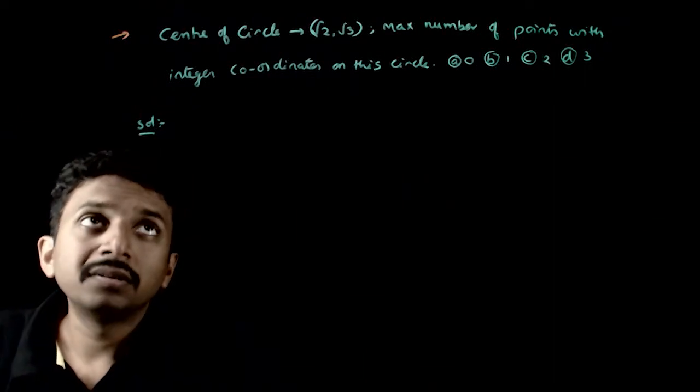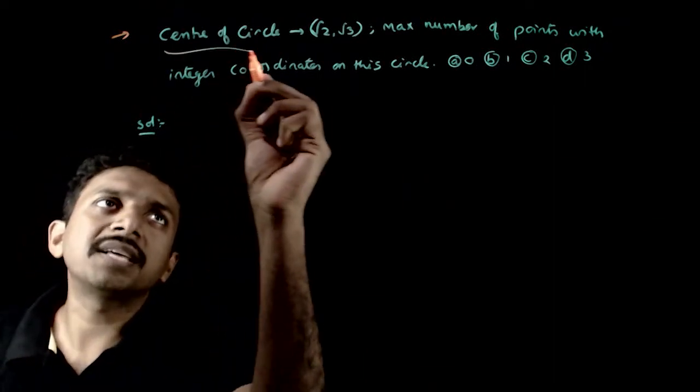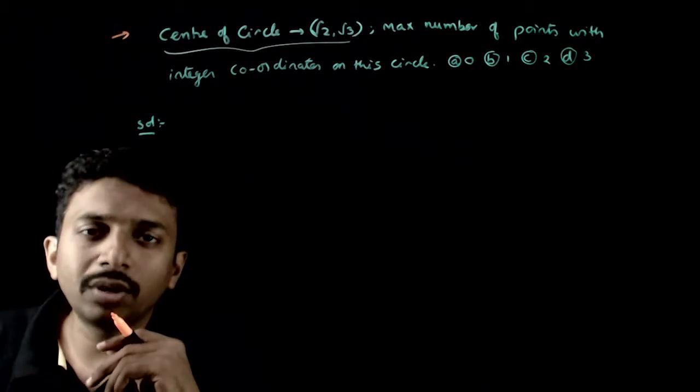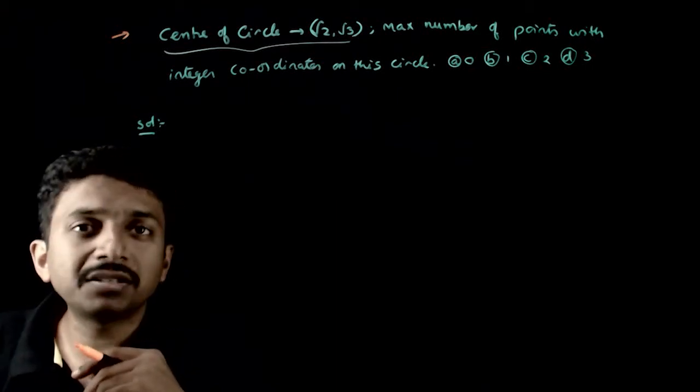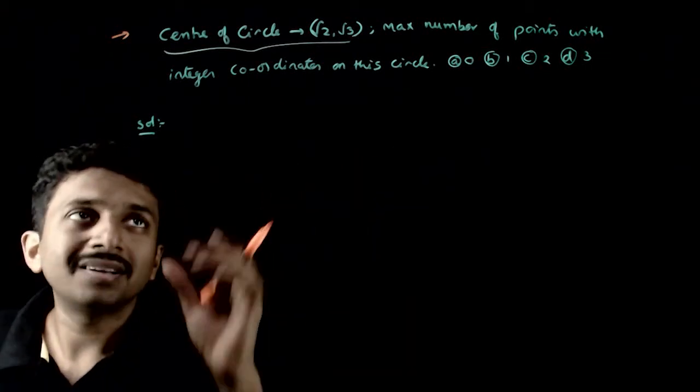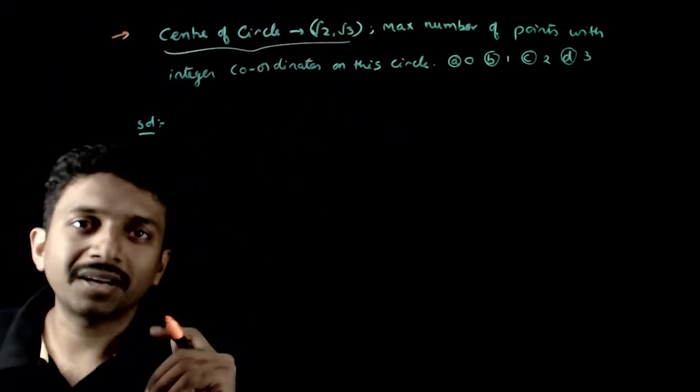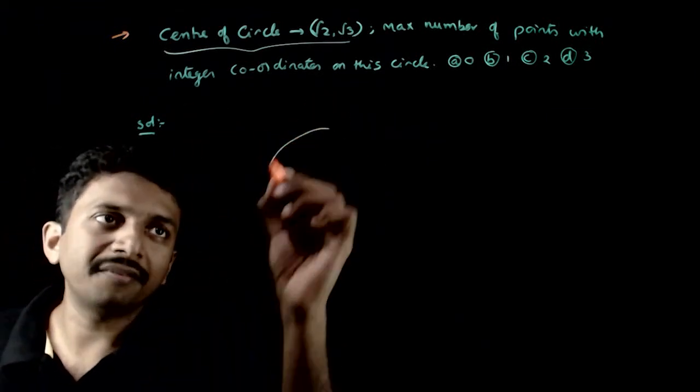So welcome students. This question we are given that the center of the circle is √2 comma √3. You are asked to find the maximum number of points with integer coordinates on the circle.